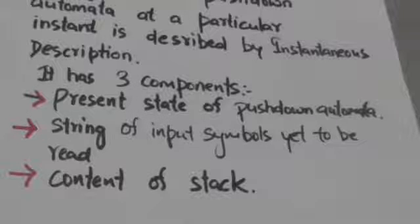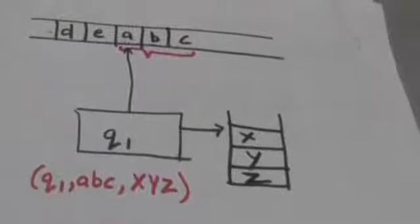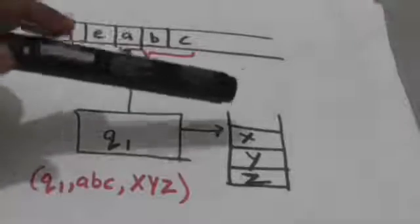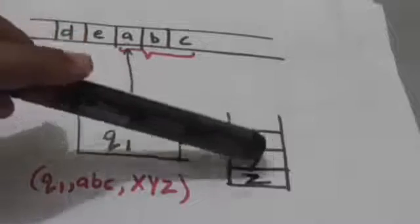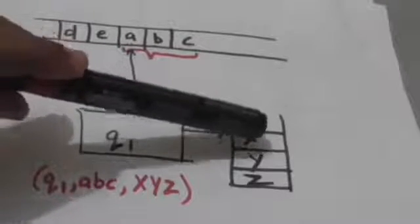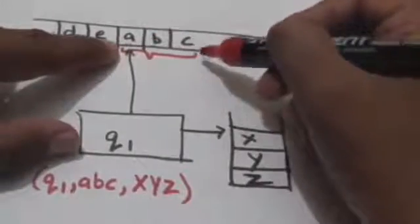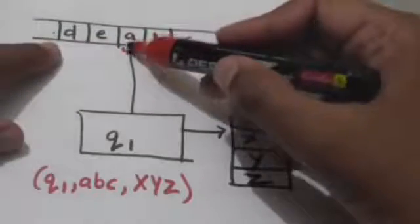To describe the configuration of a pushdown automata at a particular instant of time, we must know three things: first, the present state of the pushdown automata; second, the string of input symbols yet to be read; and third, the content of the stack. Now see this pushdown automata — its present state is q1, and the content of the stack is X, Y, Z from top to bottom. X is the stack symbol at the top of the stack.